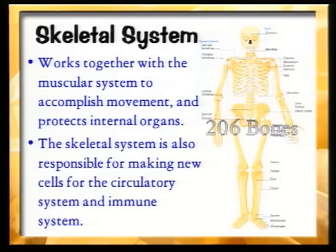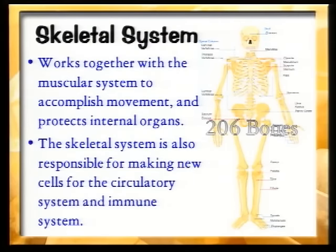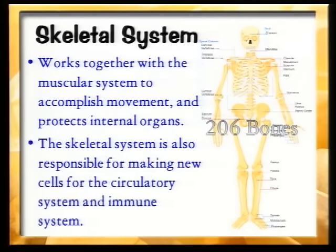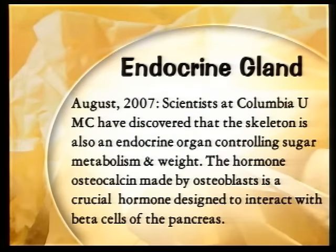Let's look at some of these systems and the marvelous designs we find. The skeletal system is made up of some 206 bones in the adult body — more than half are in the hands and feet. A newborn has closer to 350 bones, because many fuse together. The skeletal system works together with the muscular system to accomplish movement and protect internal organs. It's also responsible for making new cells for the circulatory system and the immune system. And very recently, it was discovered that the skeletal system is also involved with the endocrine system — these systems are highly interconnected.